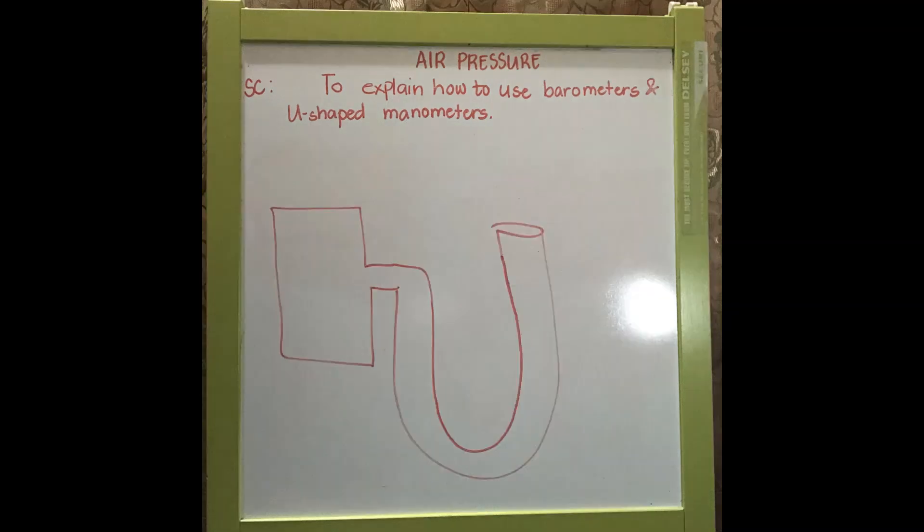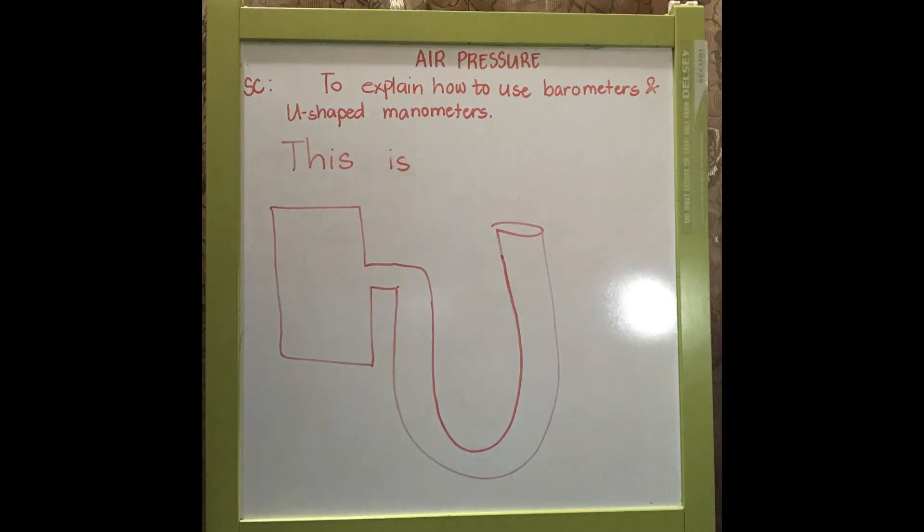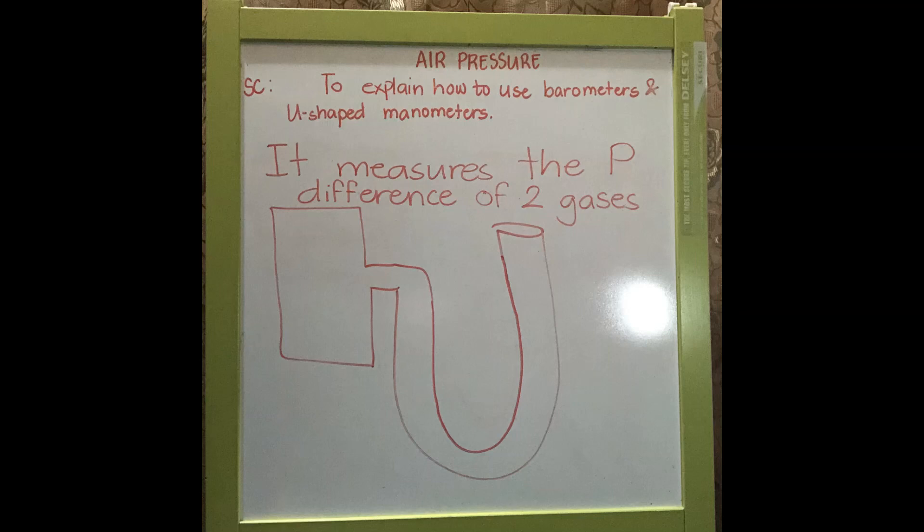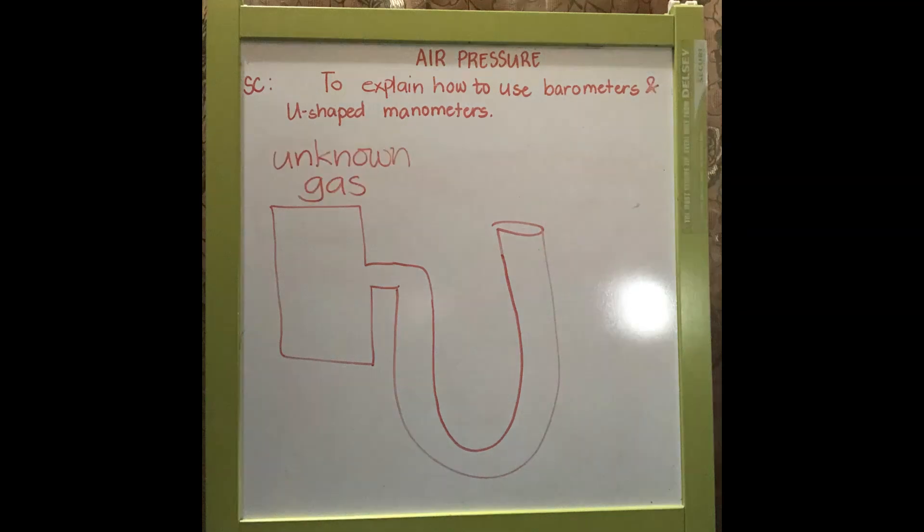Now let's go to manometers. This is a u-shaped manometer. It measures the pressure difference between two gases, usually an unknown gas trapped inside the cylinder, and the other end of the tube is open to the atmosphere.